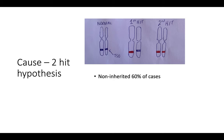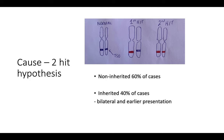In most cases there is no inheritance pattern at all, but in the inherited cases, one of the alleles is already mutated, so they only need one extra mutation to develop retinoblastoma. Because of that, they often present earlier in life and often have bilateral retinoblastoma.